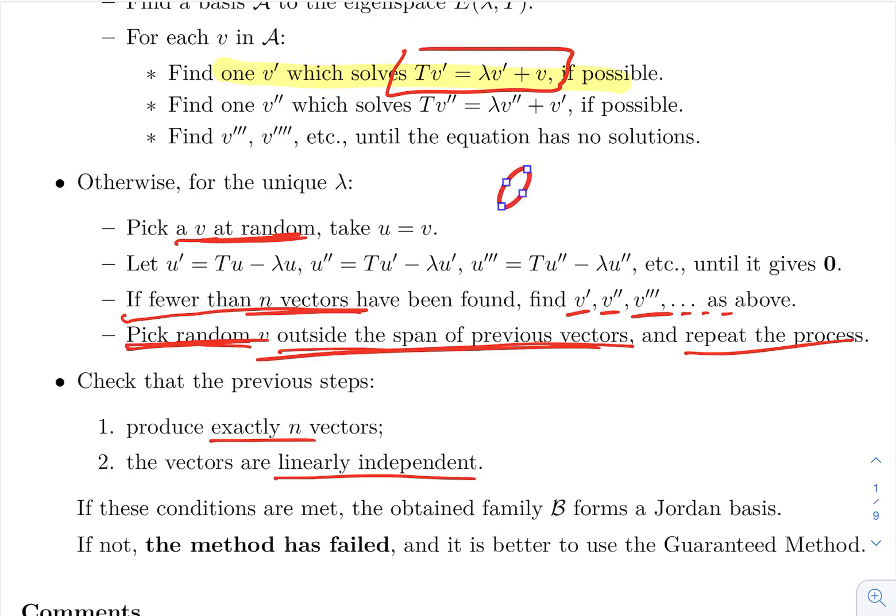Because they have this chain—you start with some u, and then you applied N and got u prime, and then you applied N and got u prime prime, and so on, until you got zero. So this is exactly what it means to be a Jordan basis. It's a basis which is completely made of chains of this type.